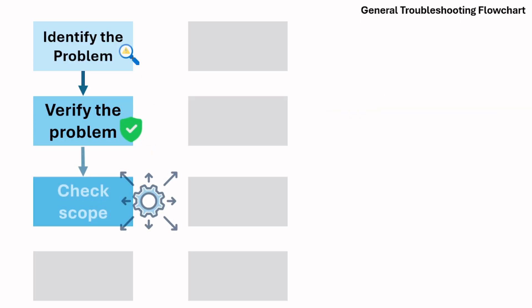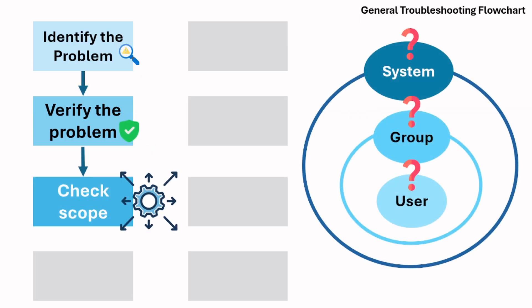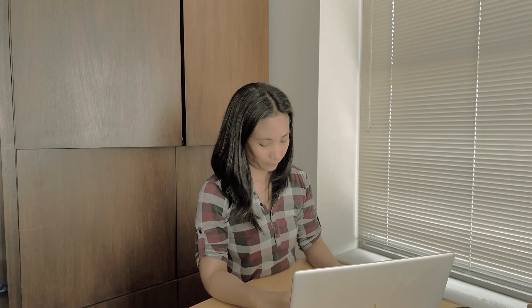Next is to check the scope by determining whether the issue is affecting only this user, a group, or the whole system. 'Do you know if it's happening for other people? I can also check on my laptop if I'm having the same issue.' Scope helps you decide whether to troubleshoot the user's device, the network, or a central service.